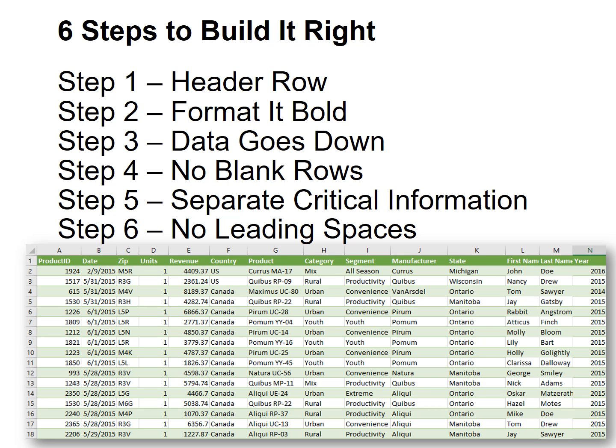Let's review the six steps. Step one: use a header row in your first row. Step two: format that header row as bold. Step three: make sure your data grows down — remember, if it's going to grow, put it in a row. Step four: no blank rows; instead, use borders. Step five: separate critical data, which is known as normalizing your database. And step six: don't use leading spaces with the space bar; instead, use indent.